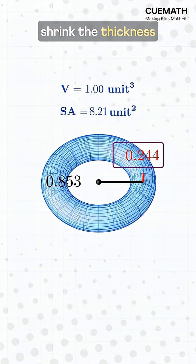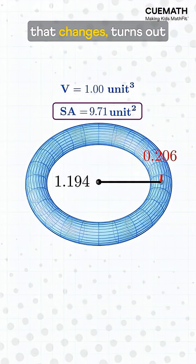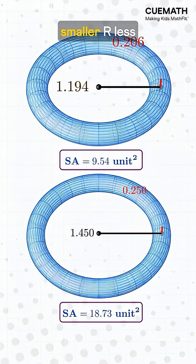Make the ring bigger, shrink the thickness, and the volume stays the same. But surface area—that changes. Turns out smaller r means less area, and bigger r means more area.